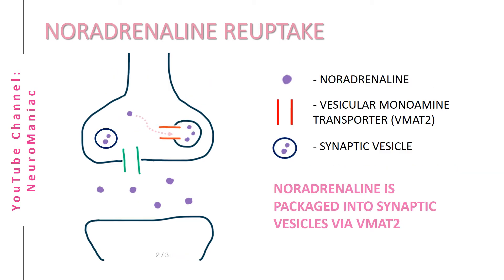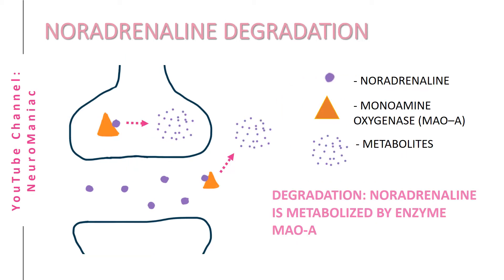Repackaging is carried out by VMAT2, short for vesicular monoamine transporter. It is then stored in these vesicles until the neurotransmitter is required again. Let's move on to degradation — this is when the neurotransmitter is broken down into metabolites. An enzyme called monoamine oxidase A, or MAO-A, metabolizes noradrenaline.